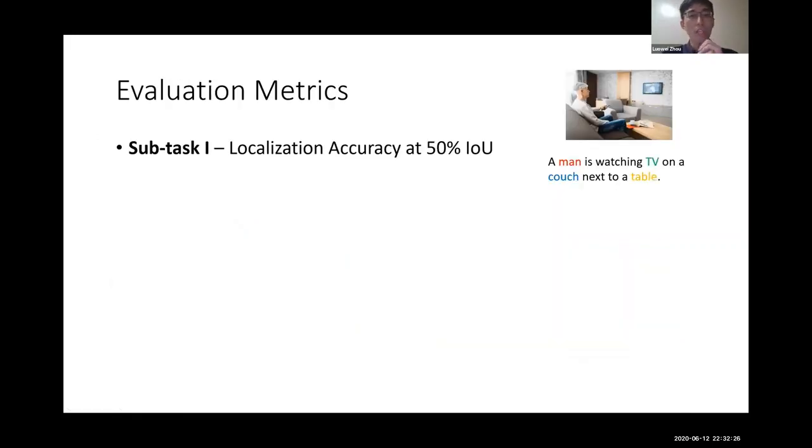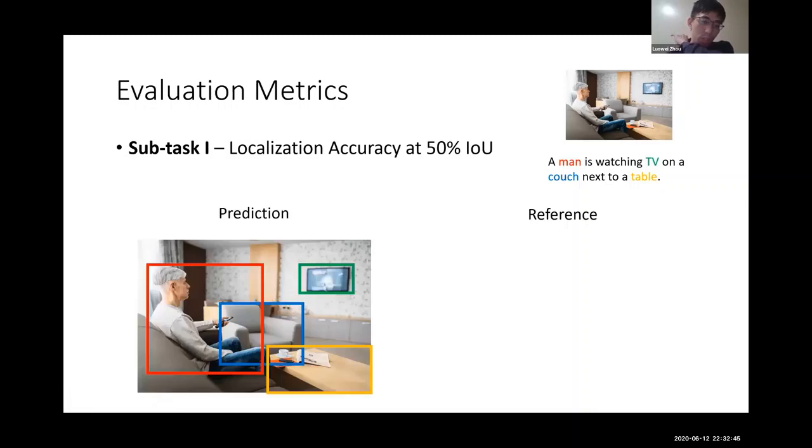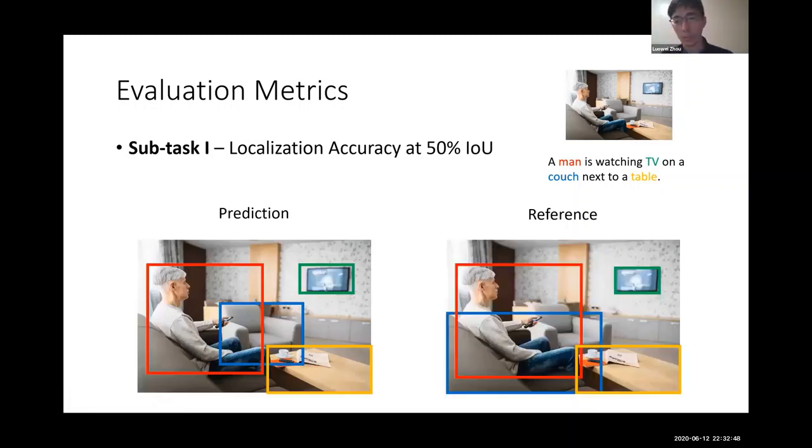So for the evaluation metrics, on subtask 1, we adopted localization accuracy at 50% IOU. And I want to show you an example. So given the same input from the previous slides, on the left hand side is a prediction and on the right hand side is the reference. So say we have a prediction like this and the corresponding reference is like this. And let's start from the red box. So the red box corresponds to the first word, man, in the caption.